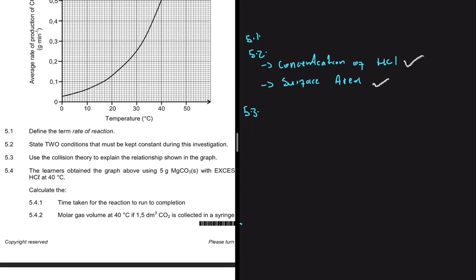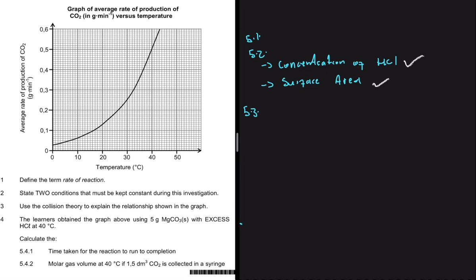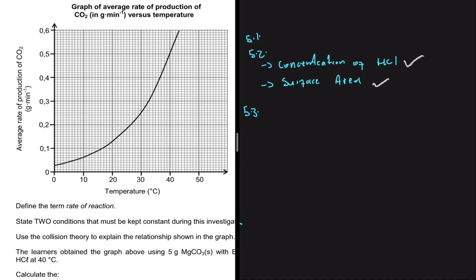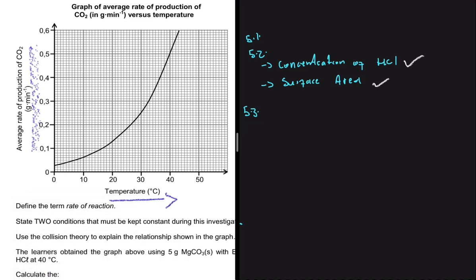In 5.3, the question asks us to use collision theory to explain the relationship shown in the graph. On the x-axis we have temperature, and on the y-axis we have the average rate of production of CO2 in grams per minute. We can see clearly that as the temperature increases, the average rate also increases.